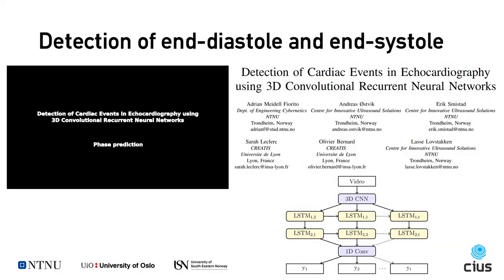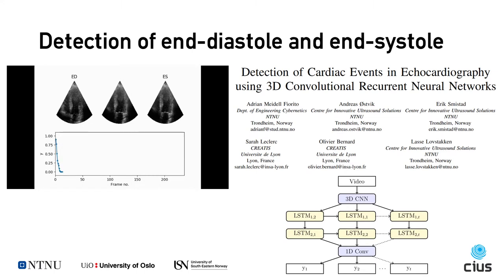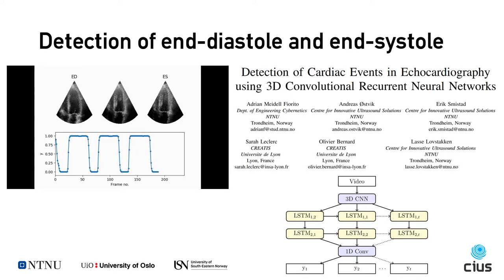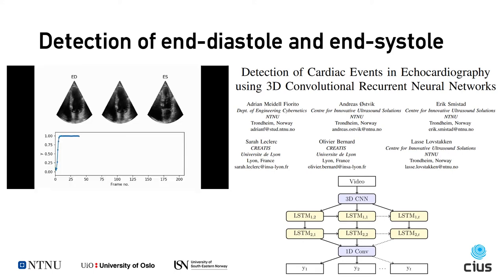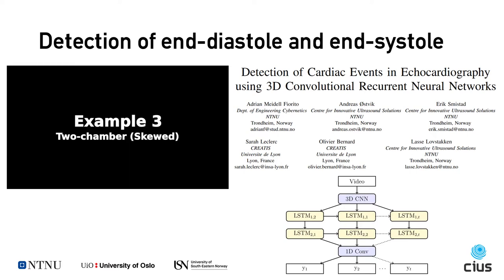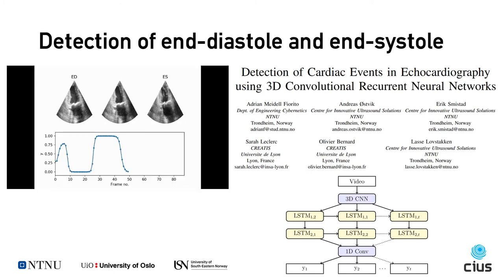To detect which frames belong to end-diastole and end-systole time points, we use our previously published method, which uses a neural network with 3D convolutions and LSTM layers to predict whether the current frame is in diastole or systole directly from the B-mode images by predicting a value between 0 and 1 for each frame. The end-diastole and end-systole are then the frames at the crossovers.